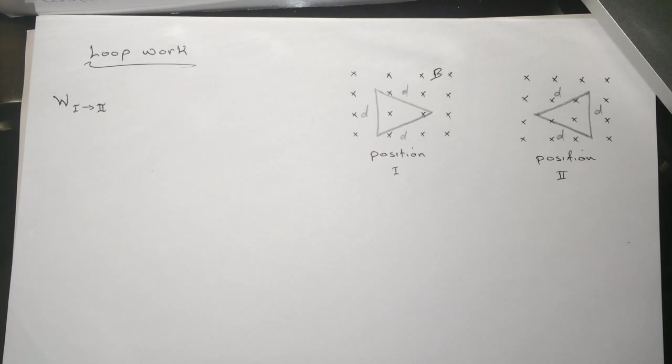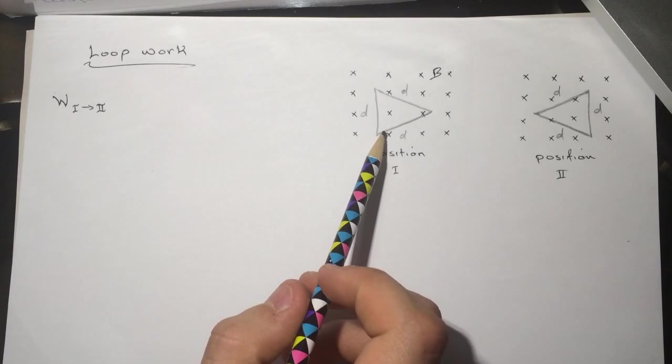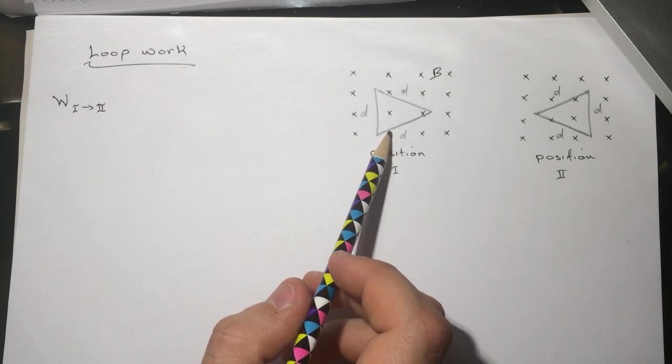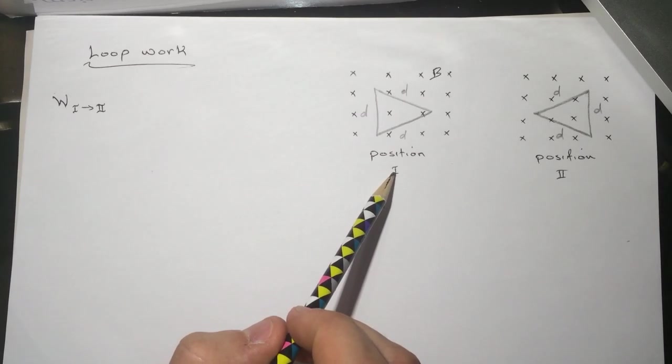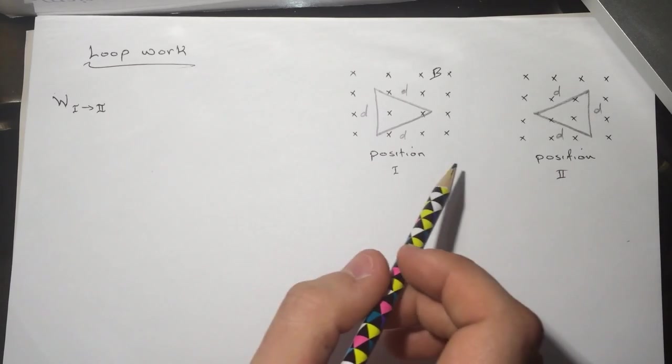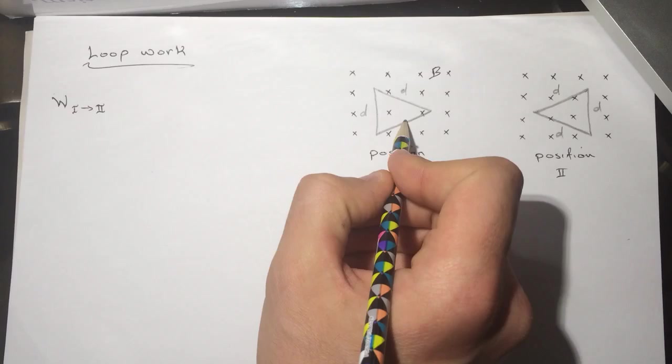Hi guys, this is smart physics tutorial for the loop work problem. Right here we have a loop and they're asking for the work done to move it from position 1 to position 2.